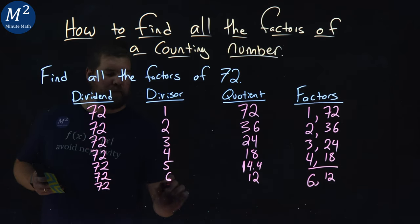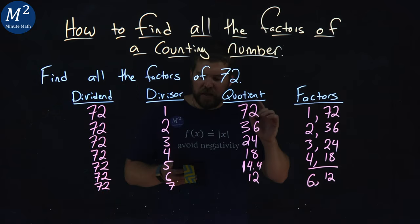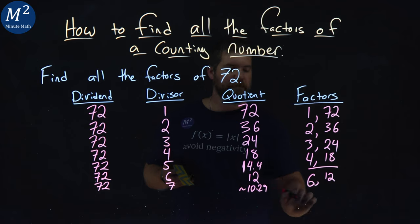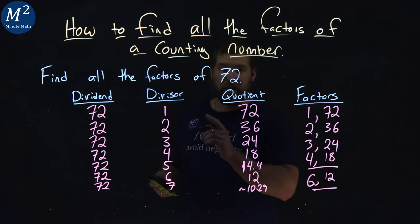What about 7? 72 divided by 7. 7 goes into 72, well, it's approximately 10.29. So no factors there. It has to go in evenly.